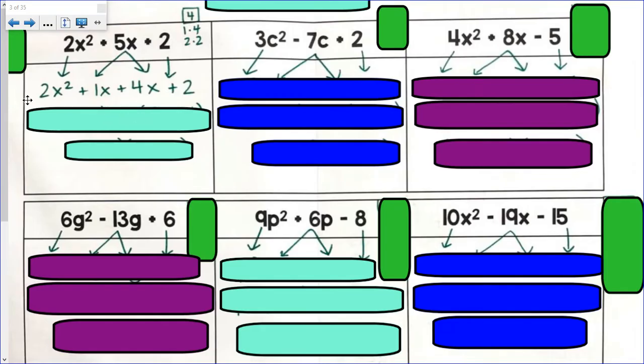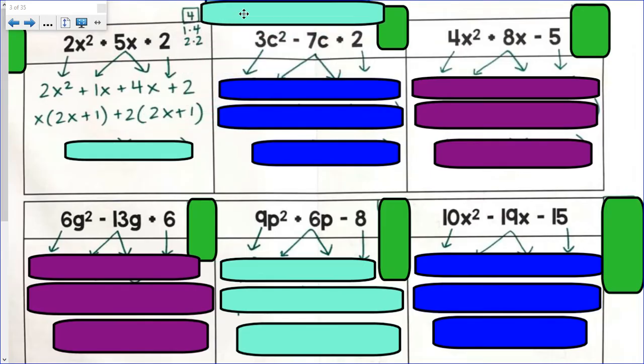I break apart 5x into 1x plus 4x plus 2. I now have a 4-term polynomial. I factor out the GCF of the first two terms. x. 2x plus 1. I factor out the GCF of the second two terms. Plus 2. 2x plus 1.